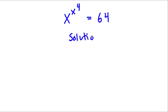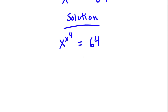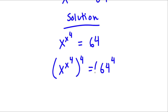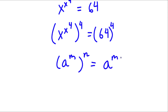Now for our solution here. I start with x to the power of x to the power of 4 is equal to 64. I'm going to take the power of 4 on both sides. So now I have x to the power of x to the power of 4, to the power of 4, is equal to 64 to the power of 4. Now, if I have something in the form a to the power of m to the power of n, this is equal to a to the power of m times n.